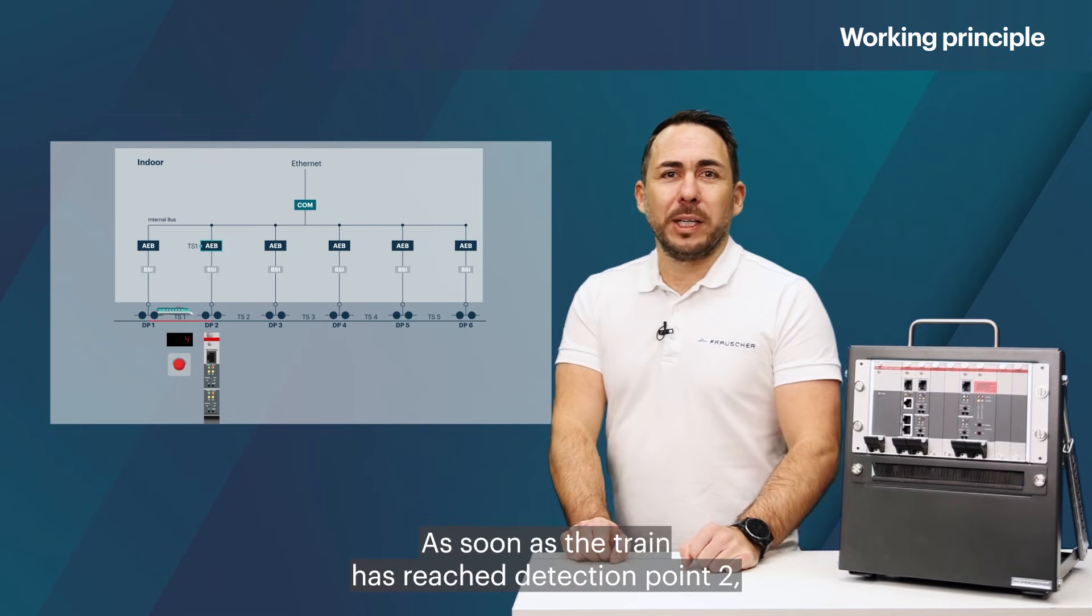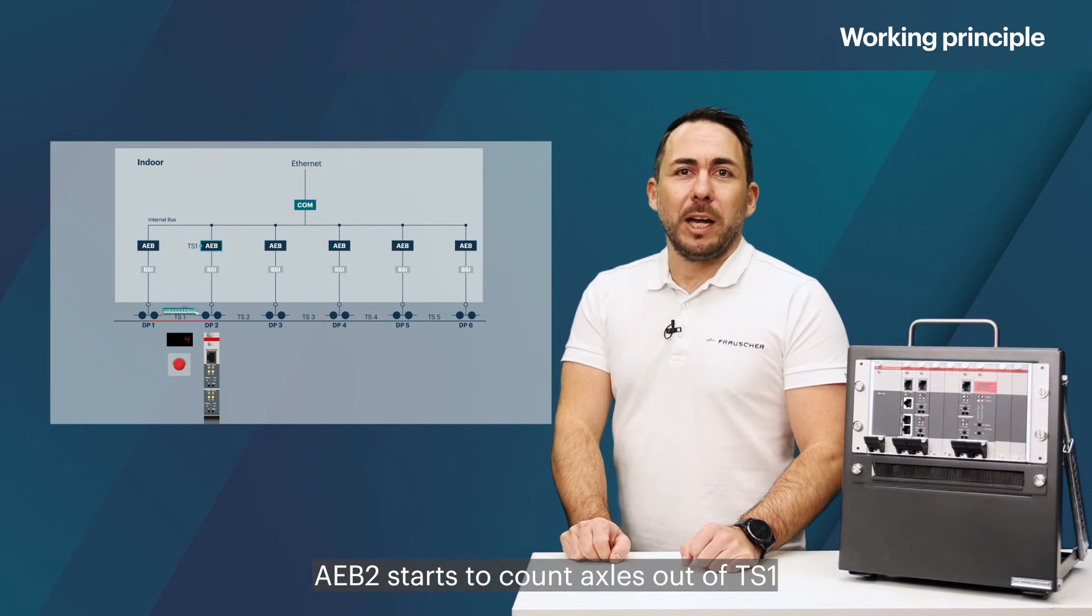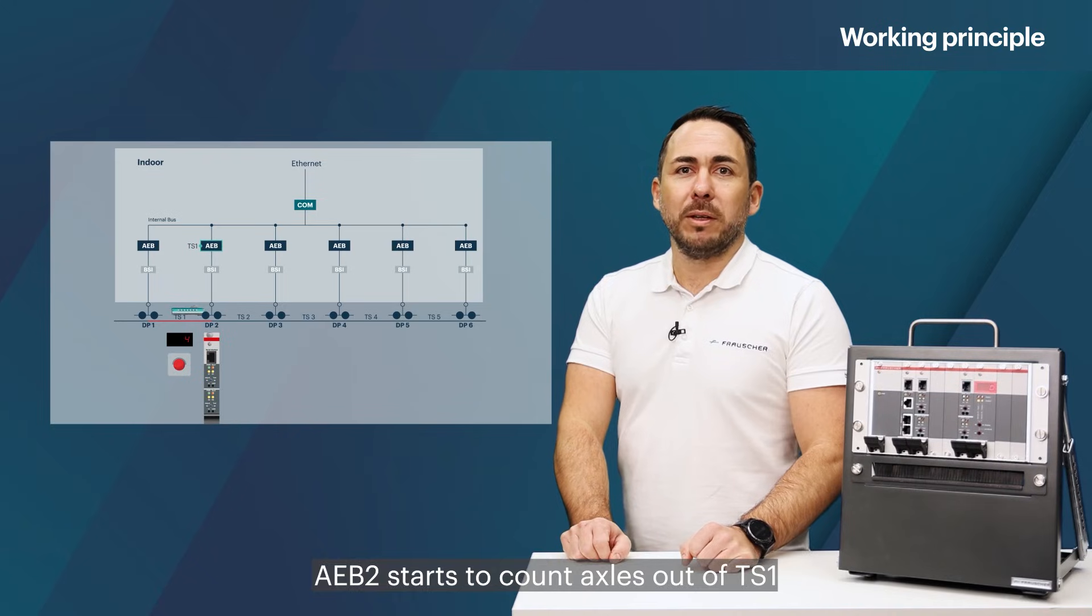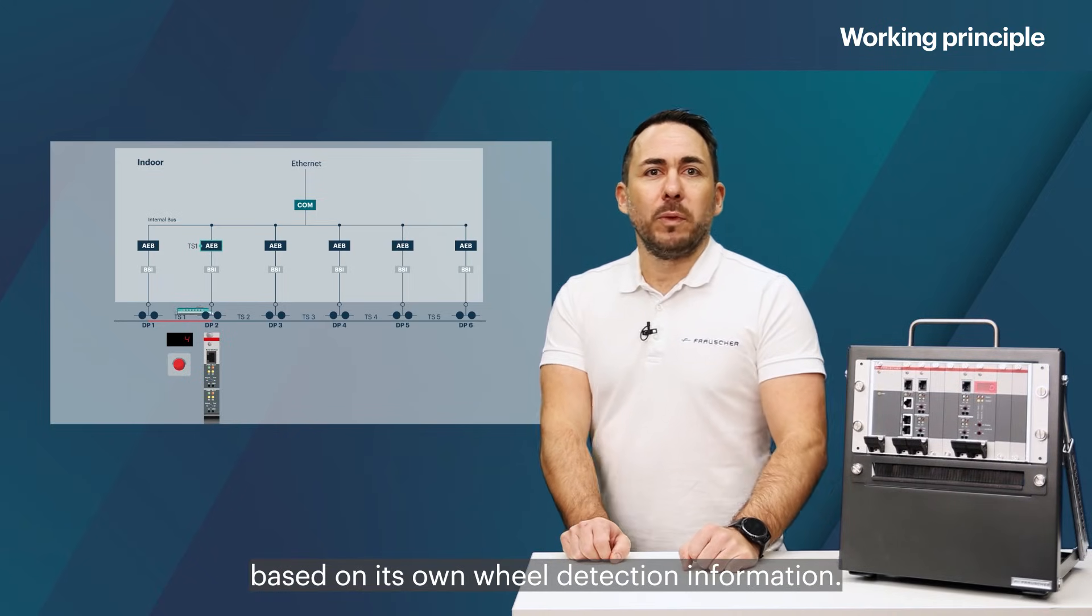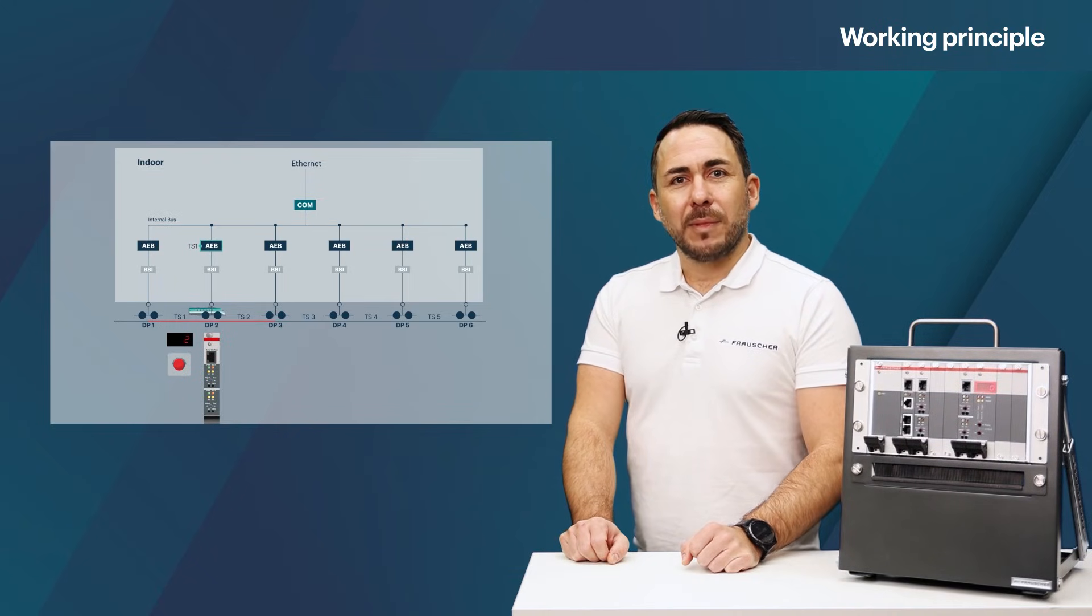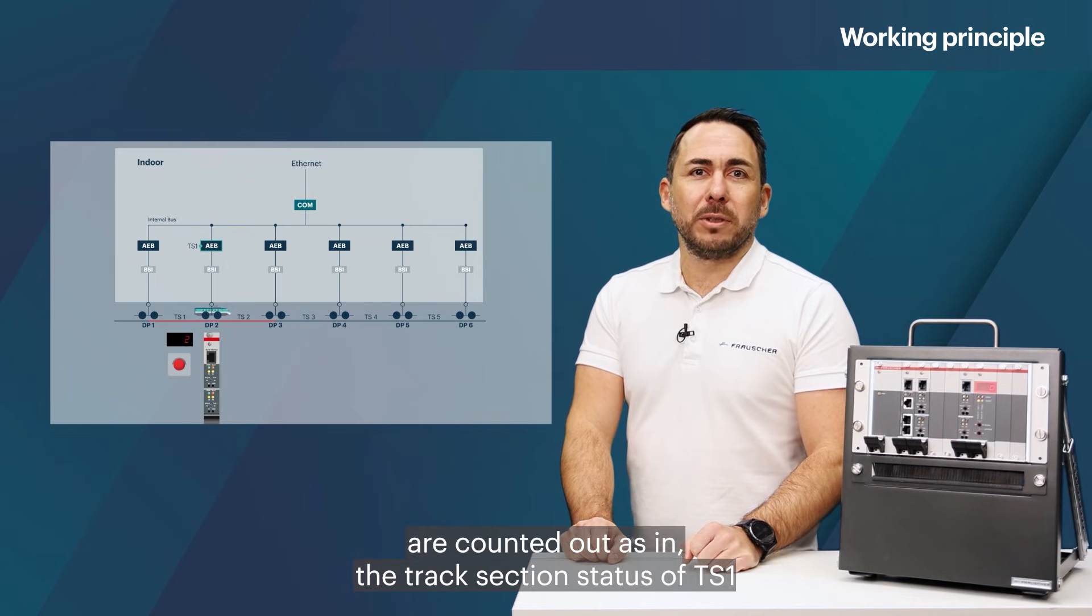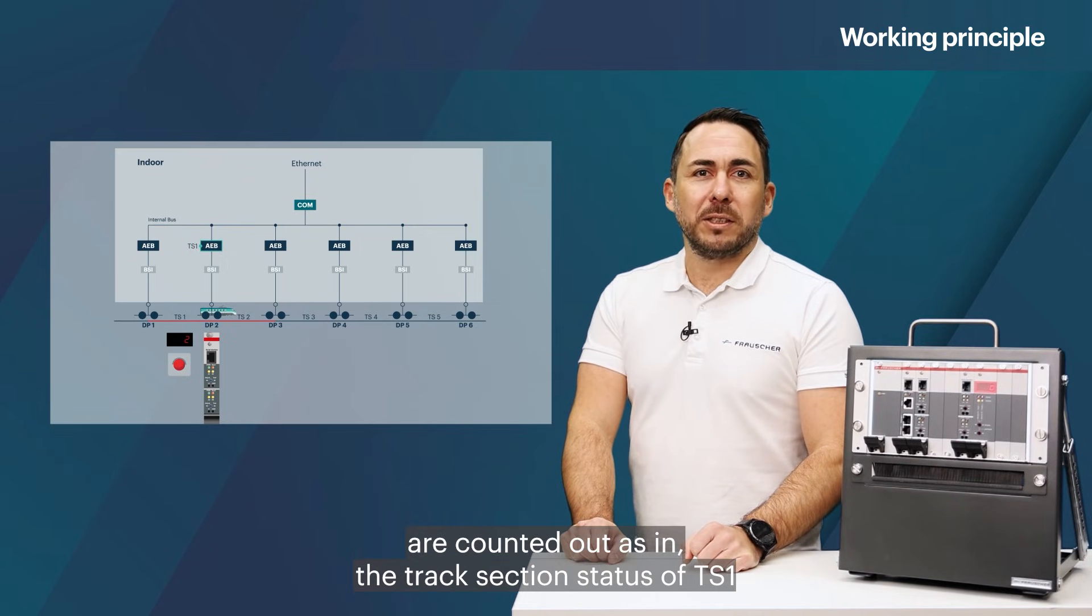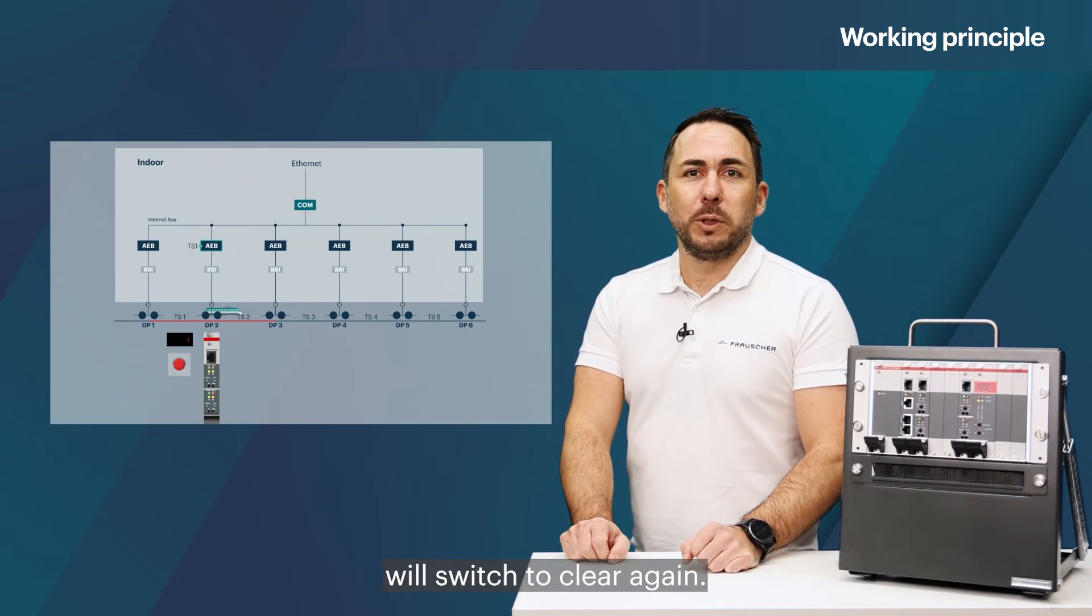As soon as the train has reached detection point 2, AEB2 starts to count axles out of TS1 based on its own wheel detection information. After the same amount of axles are counted out as in, the track section status of TS1 will switch to clear again.